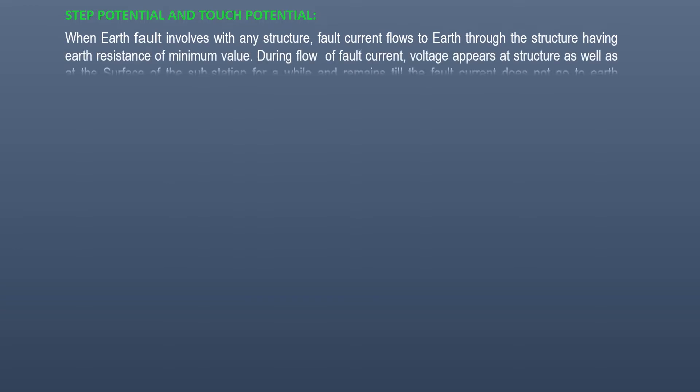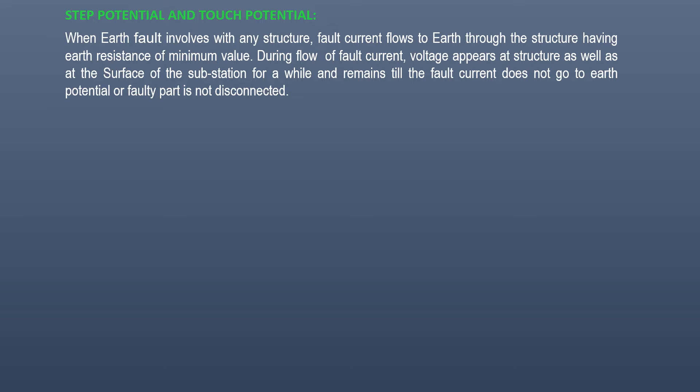When earth fault involves with any structure, fault current flows to earth through the structure having earth resistance of minimum value. During flow of fault current, voltage appears at structure as well as at the surface of the substation for a while and remains till the fault current does not go to earth potential or faulty part is not disconnected.